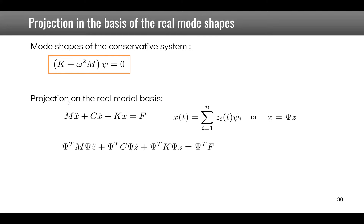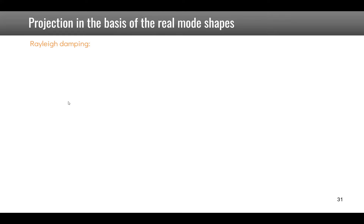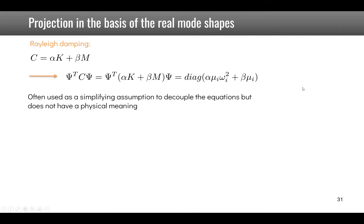In general, the damping term does not lead to a diagonal matrix and the equations remain coupled. However, in some cases — like Rayleigh damping, where C = alpha·K + beta·M — this representation leads to a diagonal matrix when pre- and post-multiplied by the mode shape matrix. The diagonal gives alpha·mu_i·omega_i-squared plus beta·mu_i. This is often used as a simplifying assumption to decouple equations of motion, but has no strict physical justification.